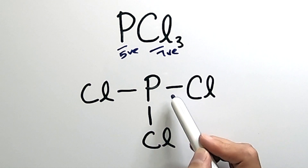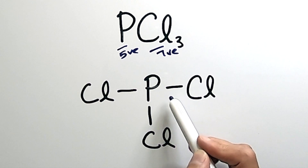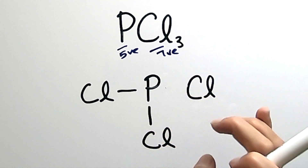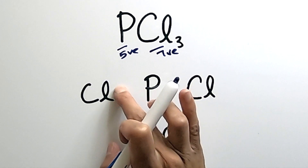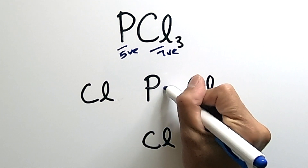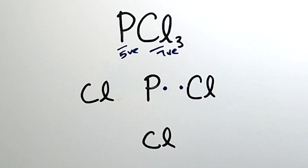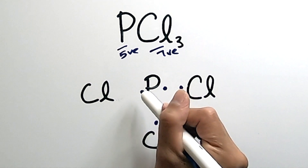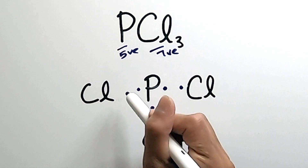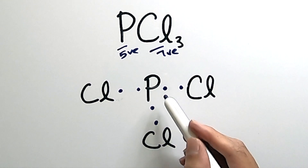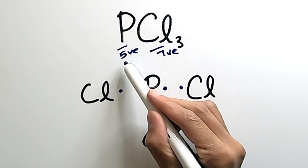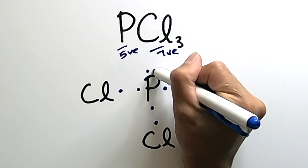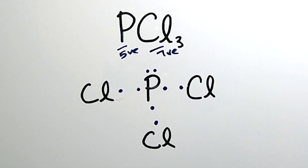A single bond is created by two electrons. So we can start by replacing each of these single bonds with two dots, or two electrons — one contributed by the phosphorus, the other contributed by the chlorine. For phosphorus, that's one, two, three electrons contributed to this compound, but it has five valence electrons, so we'll put the other two up here as a lone pair.